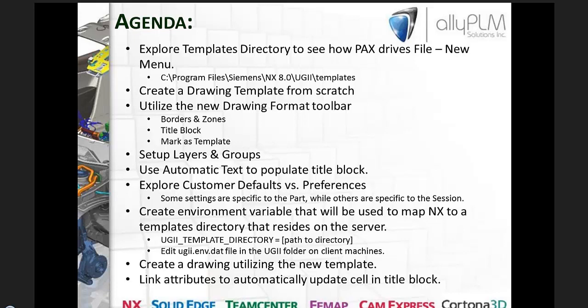I'm also going to show you how to set up layers and groups, which is another important aspect of templates. Then I'm going to use automatic text to populate a title block so that there's some intelligence behind it, and it goes out and grabs certain system attributes. Then we'll explore customer defaults versus preferences — some settings are specific to a part while others are specific to a session, such as annotation style and background color.